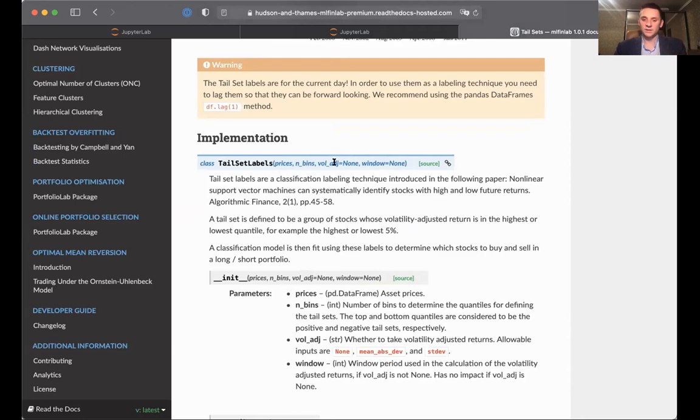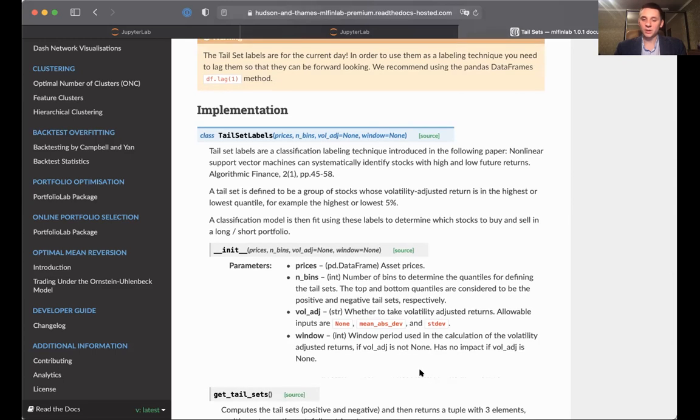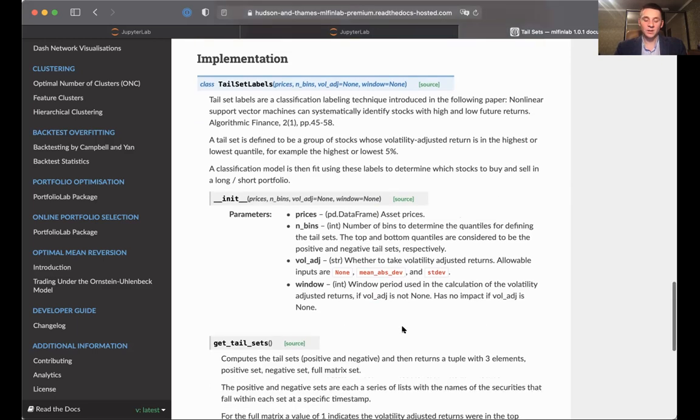For vol-adjusted flag, it means that we can either use standard returns or volatility-adjusted returns. And the allowable inputs are none, mean absolute deviation, or standard deviation. So we can either use standard deviation as a denominator for a volatility-adjusted return or mean absolute deviation. And the window. So the window period which is used in calculation of the volatility-adjusted return in the vol-adjusted parameter is not net.